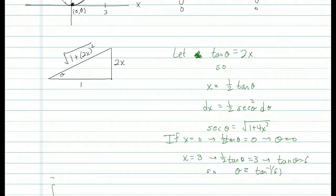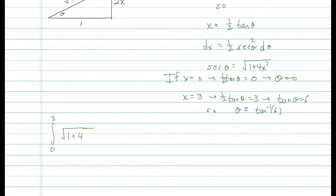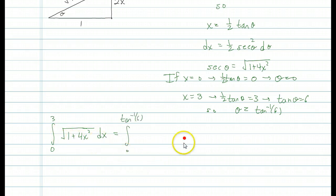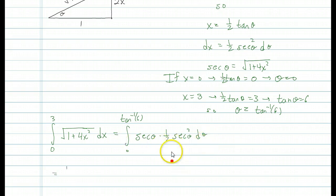Now we're going to substitute and make all these changes in our integral. Starting with our original integral, the square root is replaced by secant, and dx is replaced by one-half secant squared d theta. The limits go from 0 up to the inverse tangent of 6, and we have to integrate this function of theta. We can pull out the one-half, but we're left integrating secant cubed.